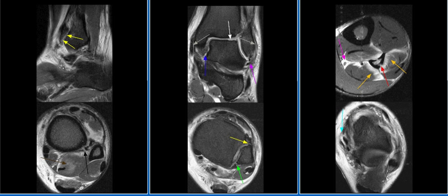A 33-year-old male with history of fibular fracture. MRI is performed for evaluation of ligament tear. The anterior and posterior syndesmotic ligaments are torn. A tear of the interosseous membrane is seen.